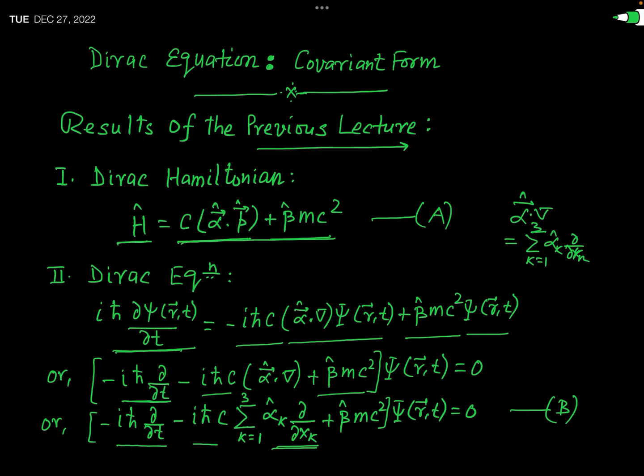This is a first-order relativistic wave equation. In the Klein-Gordon equation, the space derivative was of second order and the time derivative was of first order, which caused difficulty for Lorentz covariance. But in the Dirac equation both the time derivative and the space derivative are of first order, so it can be easily stated that the Dirac equation is covariant under Lorentz transformation.